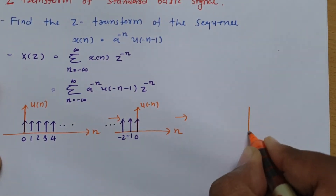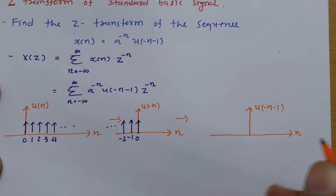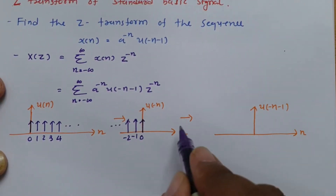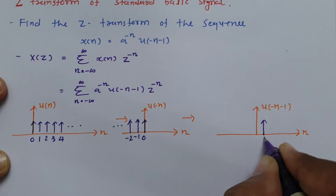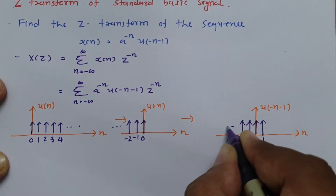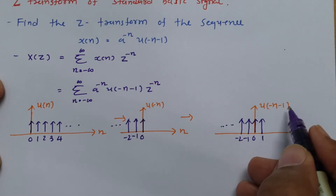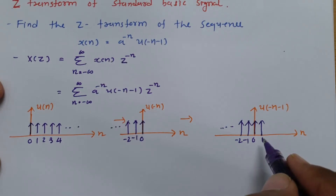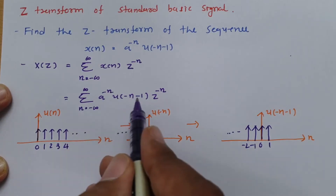From u(-n), if we compute u(-n - 1), that sequence shifts by one element in the negative direction. So the signal will have a value of 1 here, then 0 at -1, -2, and so on. Therefore u(-n - 1) has a range starting from -∞ and going up to -1. This is how it changes the limits of the given problem.